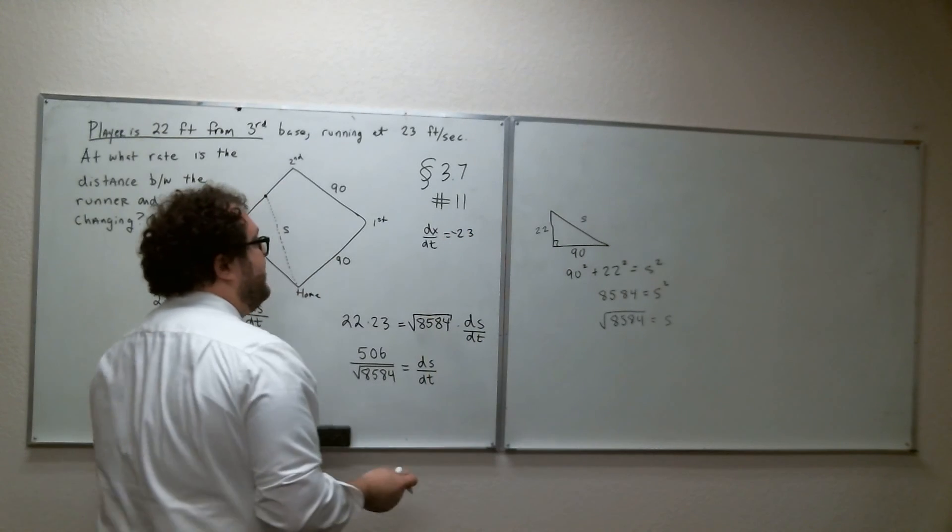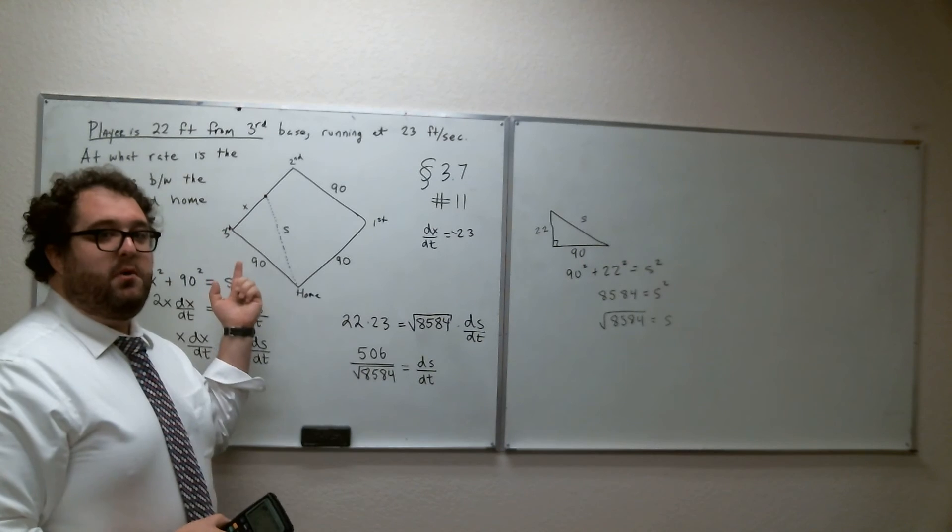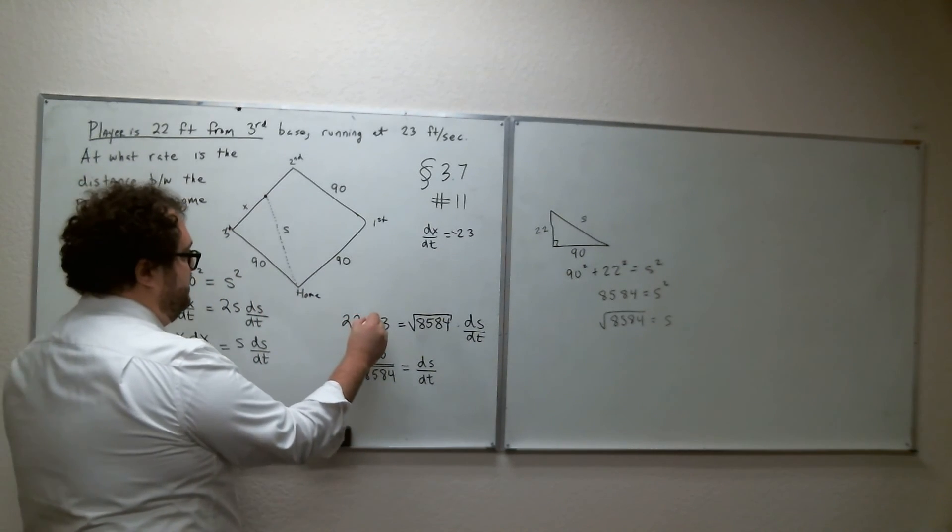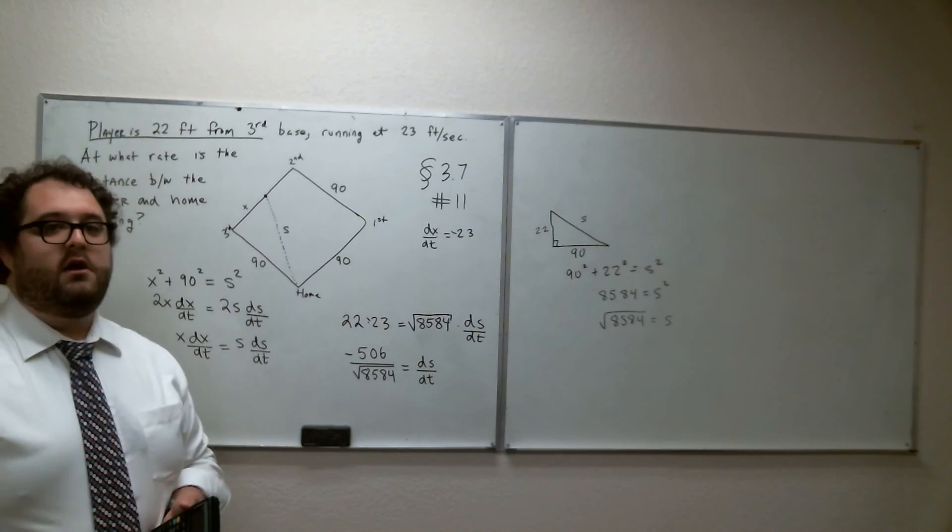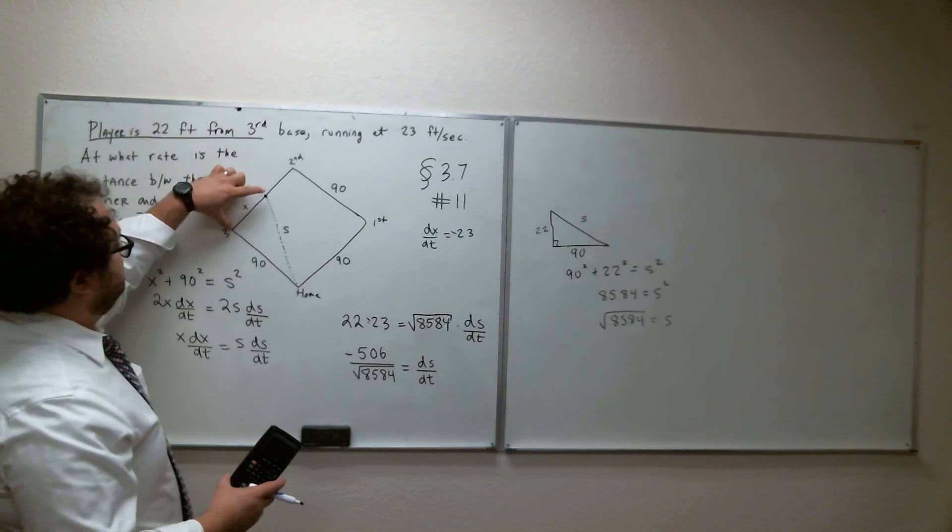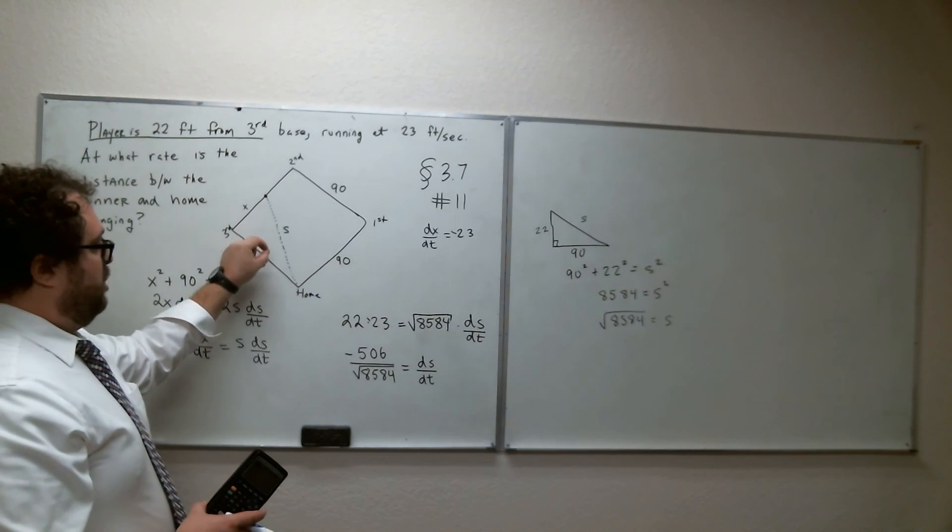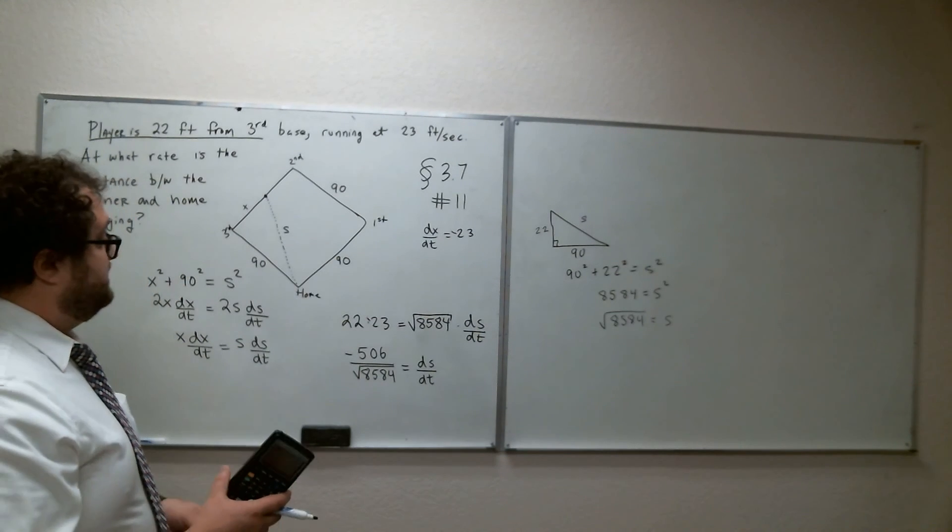Very easy thing to fix. 23 is negative. X is decreasing, getting smaller, so the rate of change is negative, which means there's a negative sign right there, which means there's a negative sign right there. Okay, because X is getting smaller, and S is getting smaller, so both of those derivatives have to be negative, because they're getting smaller.